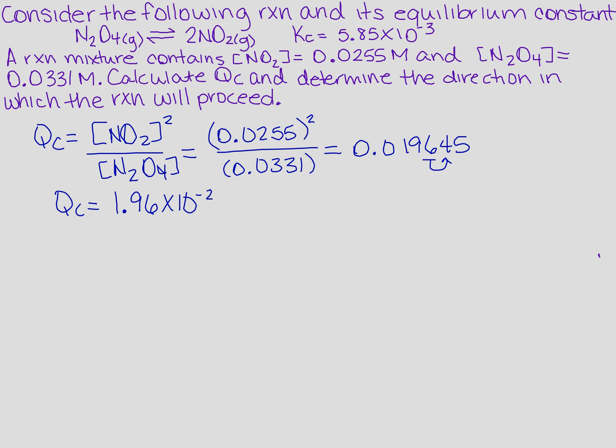Now that's great, that's half the problem, but how am I going to figure out which way it's going to proceed? Well, I need to compare Q sub C with K sub C. So my value for Q sub C we just said is 1.96 times 10 to the minus 2, and K sub C that was given to us originally at 5.85 times 10 to the minus 3rd.